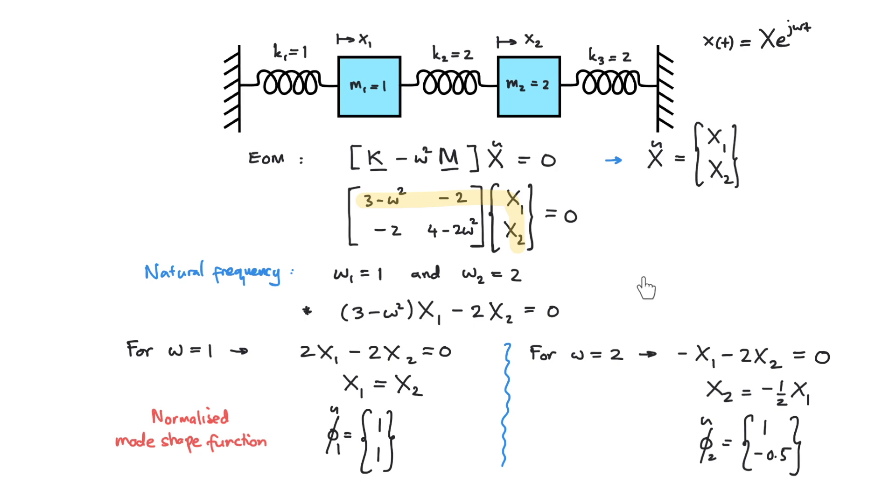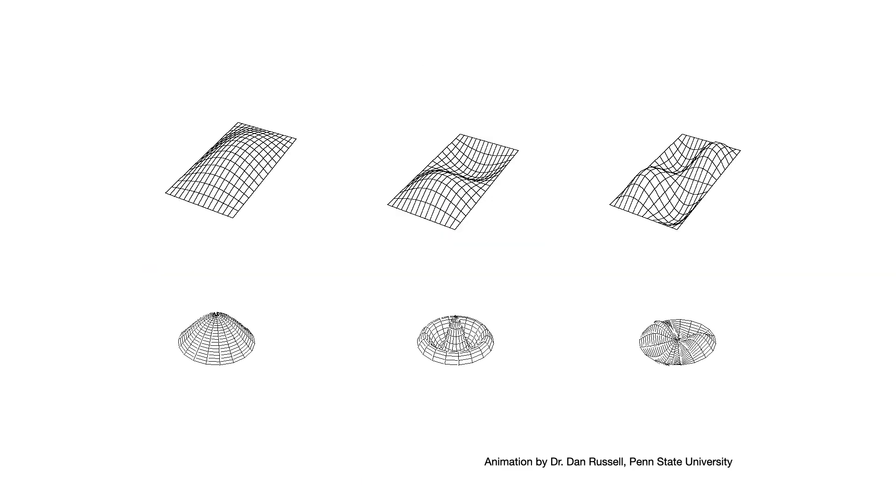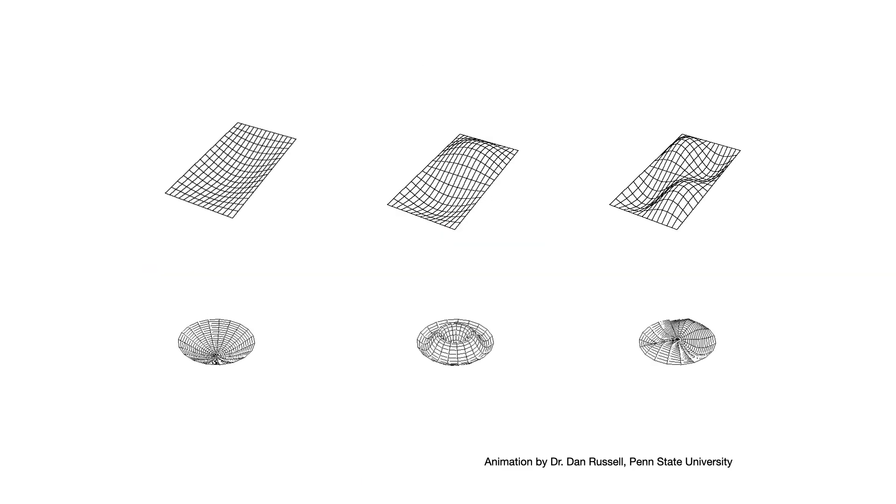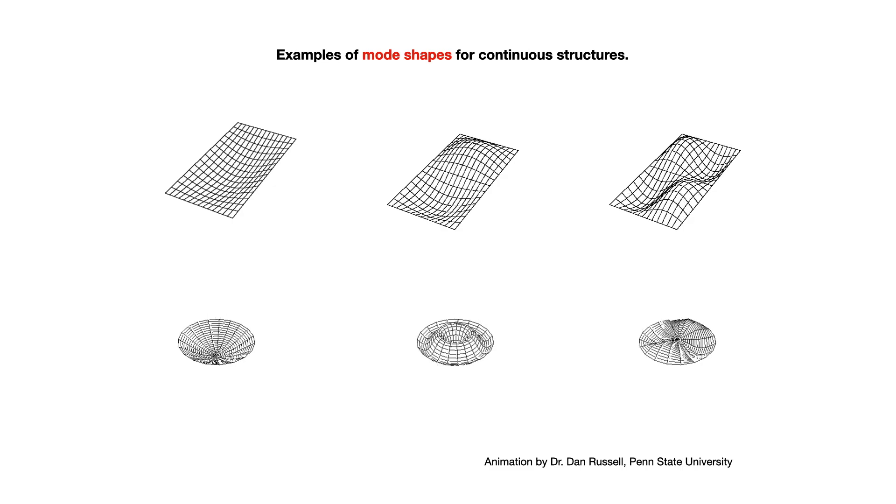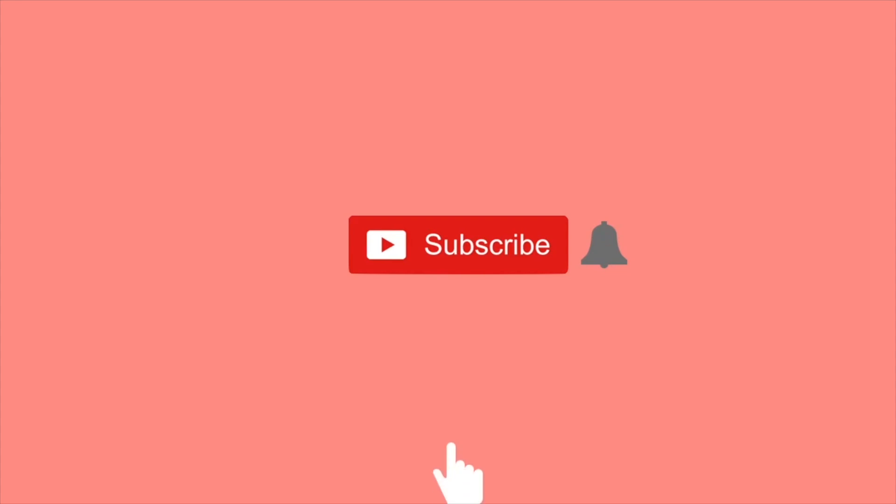Okay, that's it for the mode shape and the mode shape functions. Hope this simple example here is easy to be understood, at least for the philosophy of it. Because for continuous structures like plates and beams, the fundamental is also the same. That is to deal with the relative amplitude and phase from one point to another point in the structure. See you again guys.